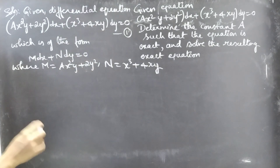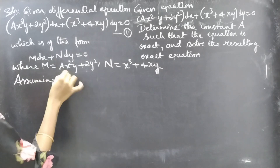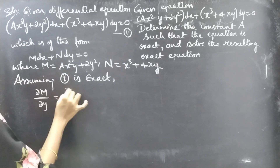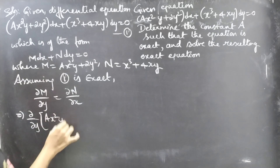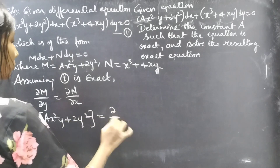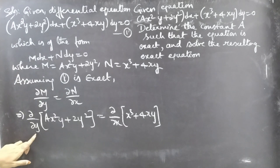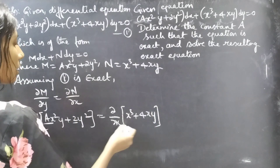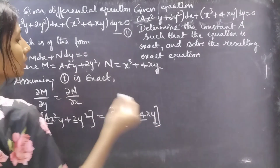We need to find 'a', assuming that this equation is exact. If equation 1 is exact, then the condition is: partial derivative of M with respect to y equals partial derivative of N with respect to x. We'll substitute M and N into this condition. In the LHS, we find the partial derivative with respect to y, treating x as constant — so ax² is constant in the first term, and in the RHS we find the partial derivative with respect to x, treating y as constant, so 4y is constant in the second term.